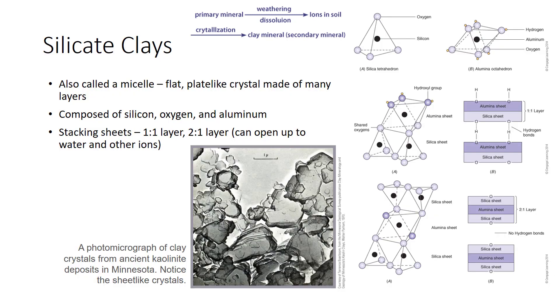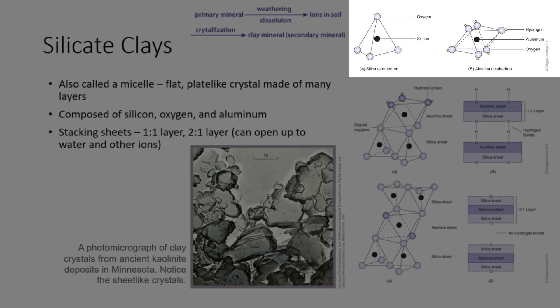A particle of silicate clay, called a micelle, is a flat plate-like crystal made of many layers. Each layer, in turn, is made of two or three sheets. The sheets are mainly composed of three elements — silicon, oxygen, and aluminum. These three elements combine to form several kinds of sheets, which can combine to form several kinds of clays. In the soil, silicon combines with oxygen to form the silica sheet. The second important sheet in silicate clays is the alumina sheet, which has aluminum in the center surrounded by hydroxyl groups. These sheets can stack atop one another in several ways to form a complete clay crystal.